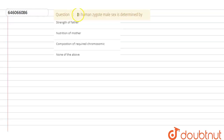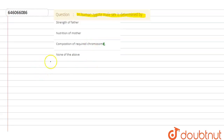The question is: In human zygote, male sex is determined by. The options are: strength of father, nutrition of mother, composition of required chromosomic content, or none of the above. As per our question, human zygote male sex is determined by — let's explore.